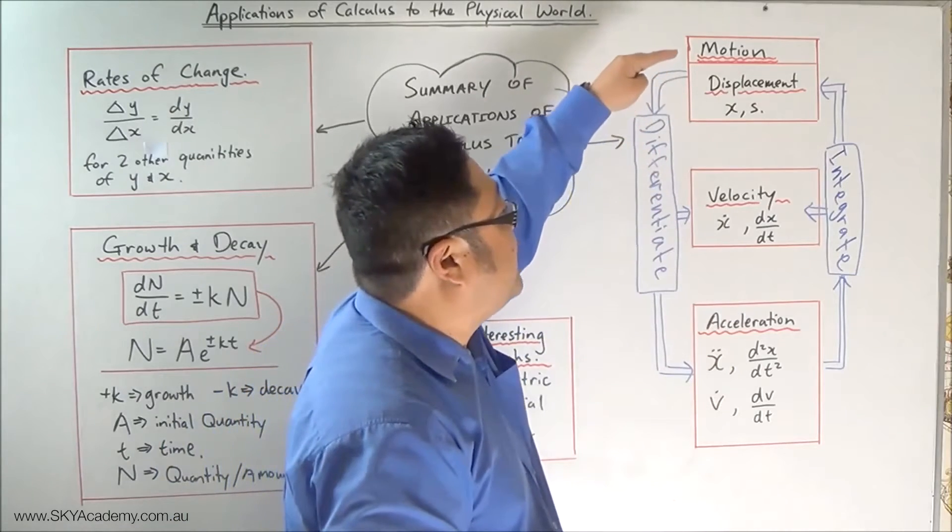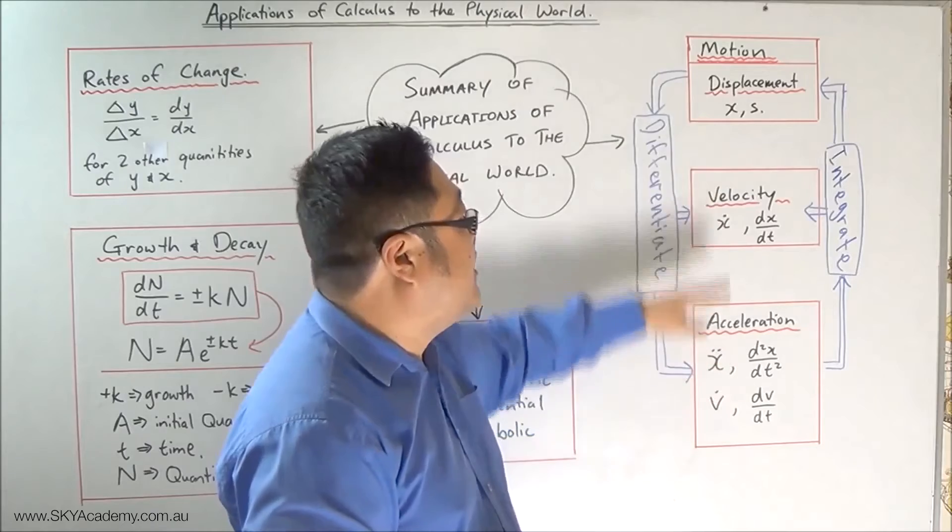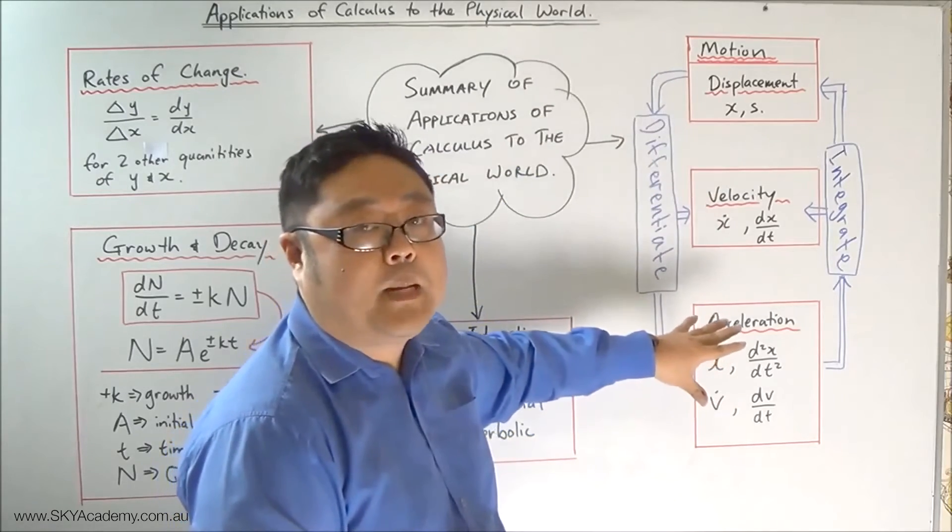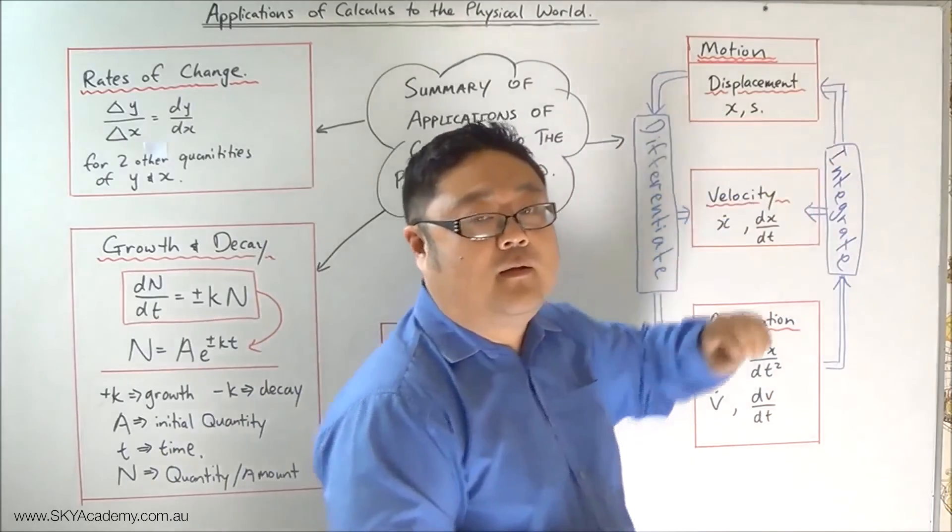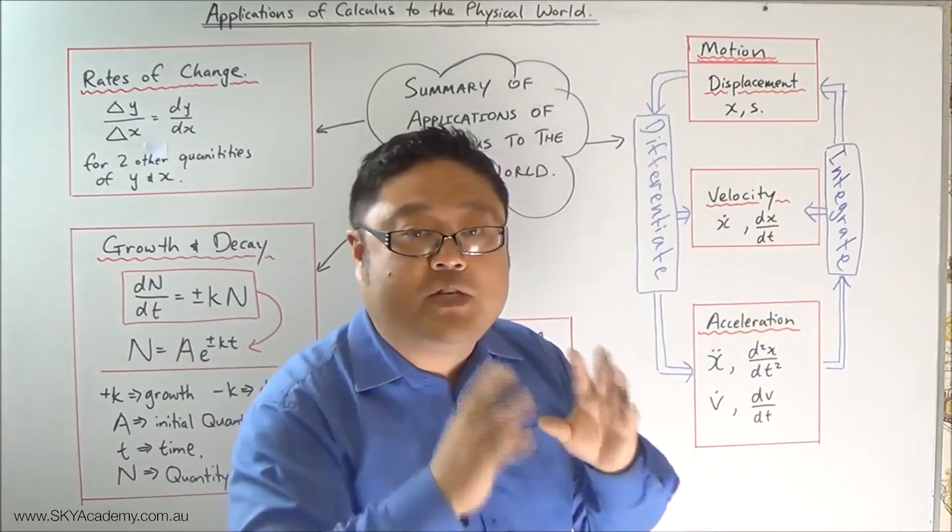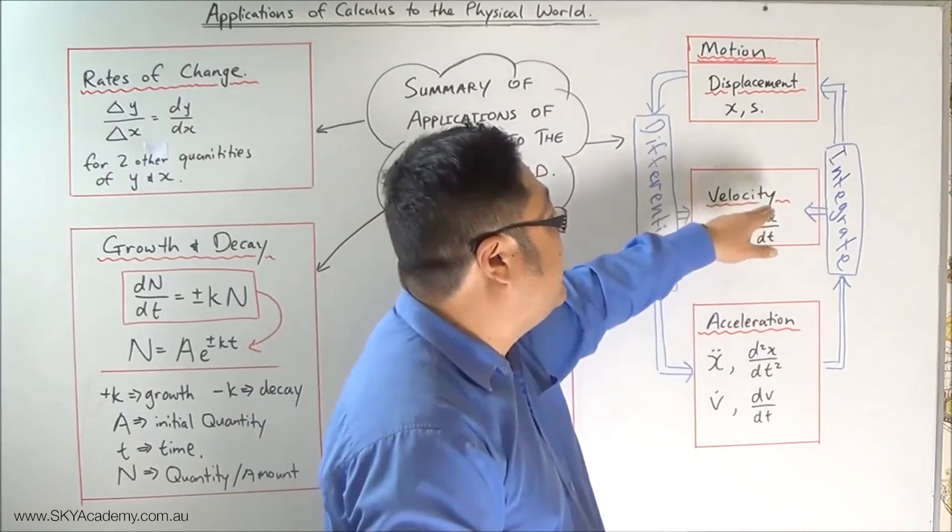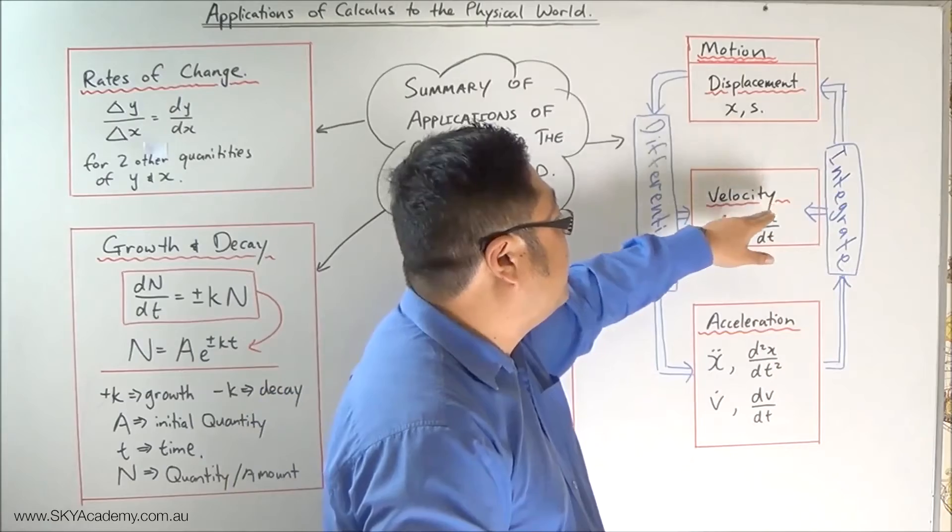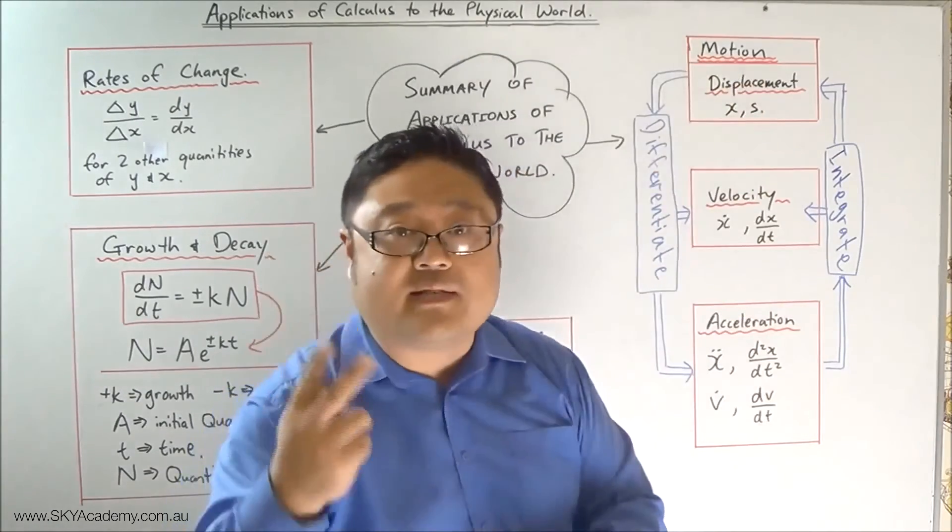And we got to see that in order to go from motion to velocity, velocity to acceleration, you differentiate. And we got to see that the reverse, working the other way, requires the reverse process which is integration. So to go from acceleration to velocity you integrate, to go from velocity to displacement you integrate, and to go from acceleration to displacement you integrate twice.